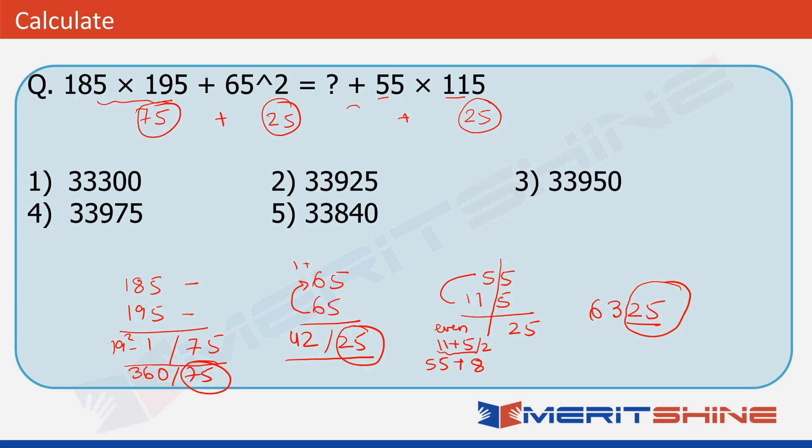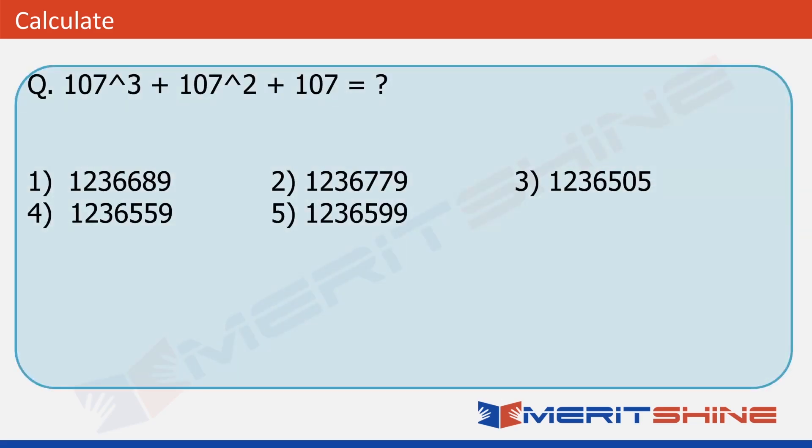So, now, we have to find what this remaining number would be. So, 75 plus 25 gives us double 0 in the end. Now, what added to 25 will give us double 0 in the RHS? It has to be 75. So, my number has to end in 75, which is true only for option number 4. So, you see how simple this question was. All you had to know was that when you multiply 185 into 195, the number would end in 75. 65 square will end in 25. Again, 115 into 55 would end in 25. So, you could immediately say the missing number will end in 75.